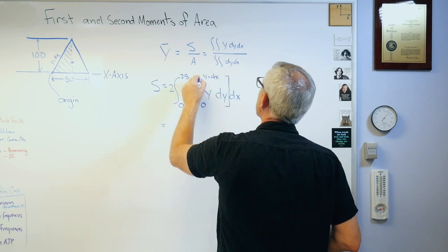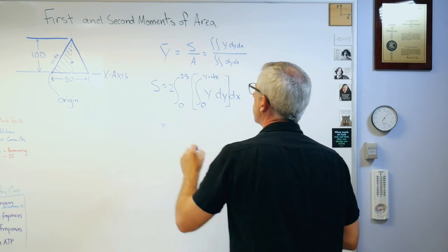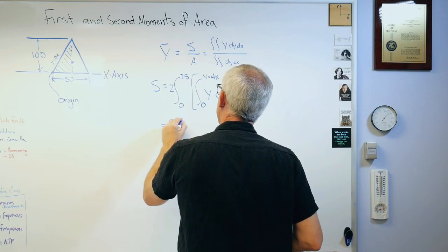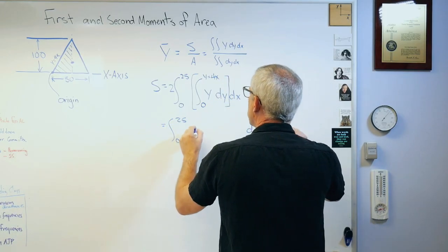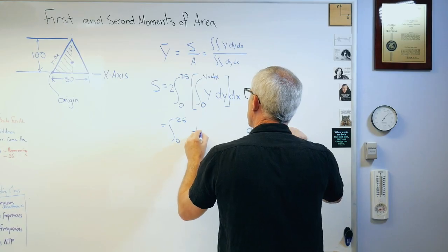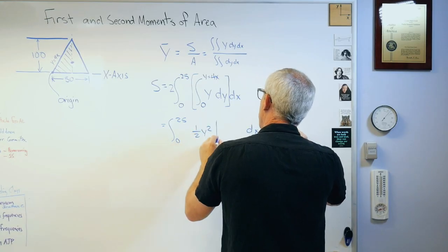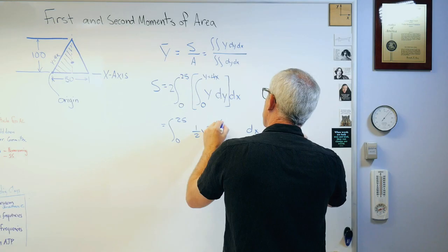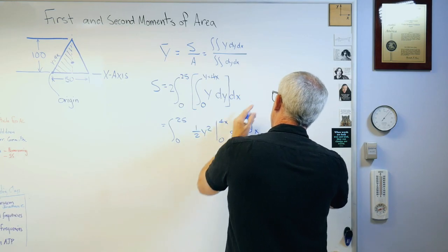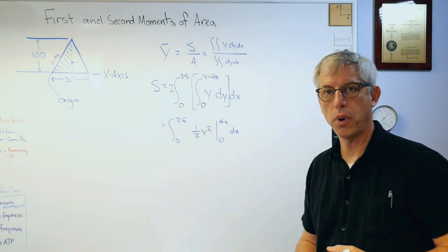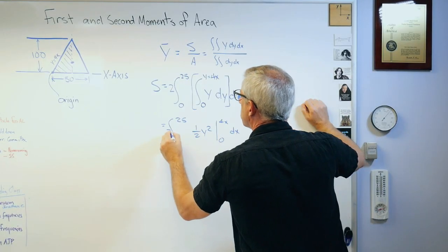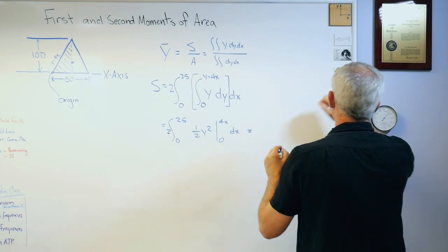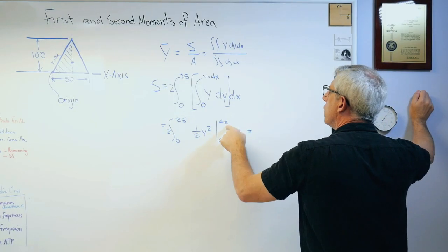Let's evaluate this first integral, the inside integral first. I'm going to leave that, I'm not going to worry about the outside integral yet. I'm going to put dx way over here. Well, the integral of y is 1 over 2 y squared, and I'm going to make that go from 0 to 4x. How do you evaluate that?